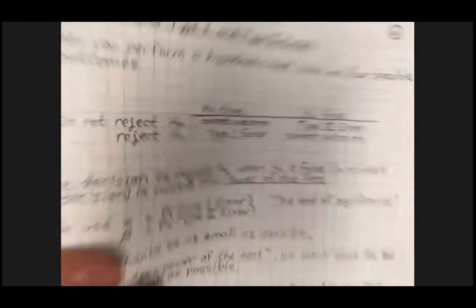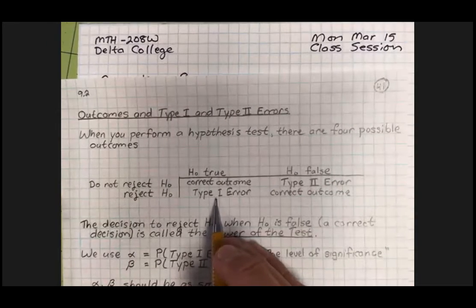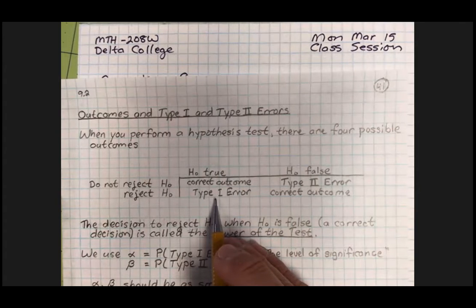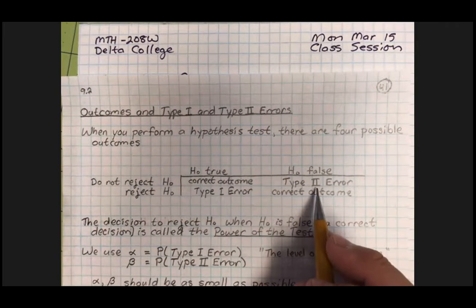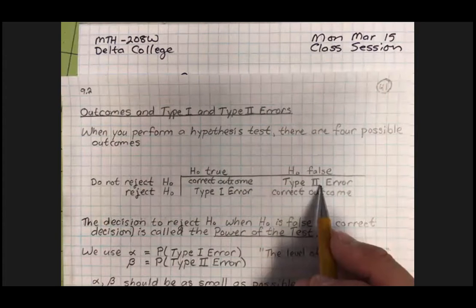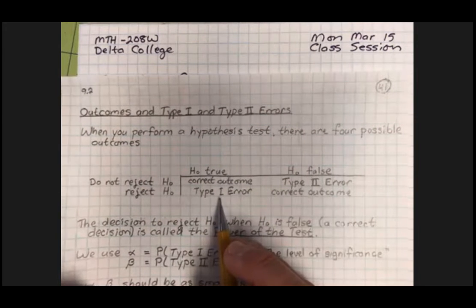Let's look at another example to show that sometimes a type 1 error is the worst-case scenario — the thing we consider very bad — and the type 2 error is bad but not as bad. But sometimes it's reversed: the type 2 error is very bad and the type 1 error is just moderately bad.